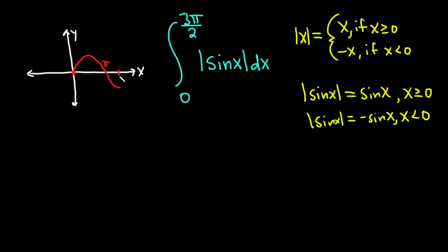Sine of pi is 0. So this is pi and it comes back down. And then 3 pi over 2 is here. Sine of 3 pi over 2 is negative 1. So this is negative 1. And this is 1 and this is pi over 2. So from 0 to pi it's going to be positive. And then from pi to 3 pi over 2 it's going to be negative. So let's go ahead and break this integral up.